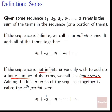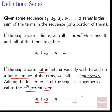Adding the first n terms of the sequence together is called the nth partial sum. So if we add A1 plus A2 plus A3 up until An, and it just stops there — we don't go any farther past An — that is the nth partial sum, because it's only a part of our infinite sequence.